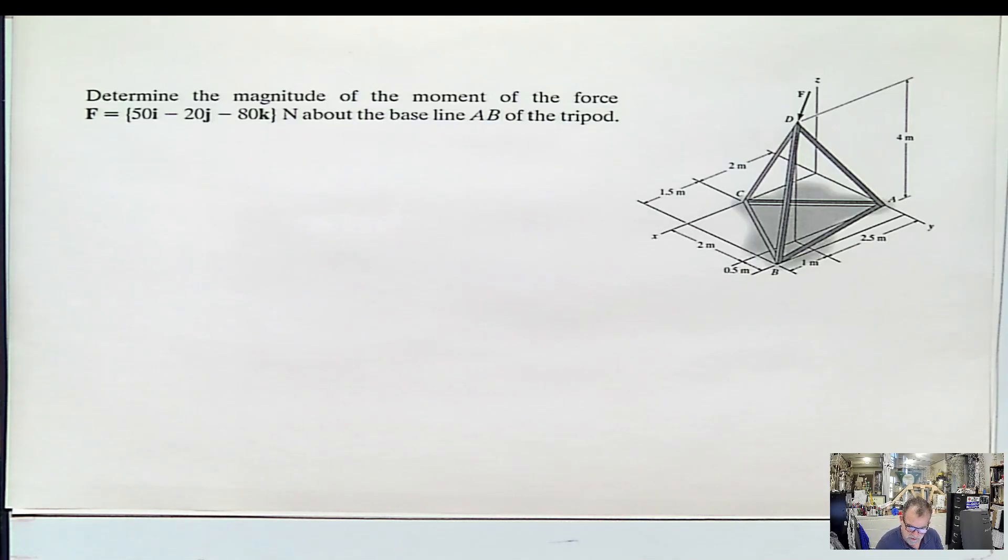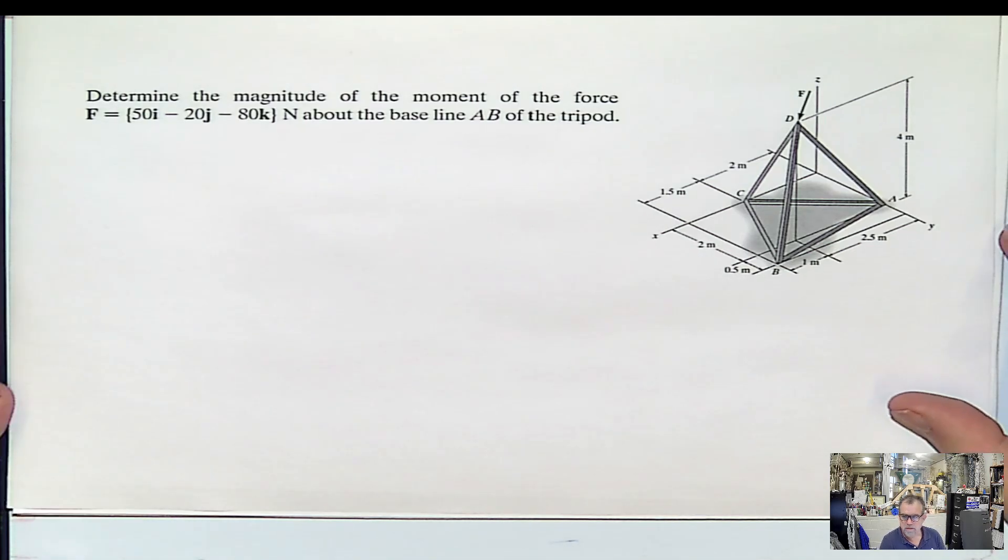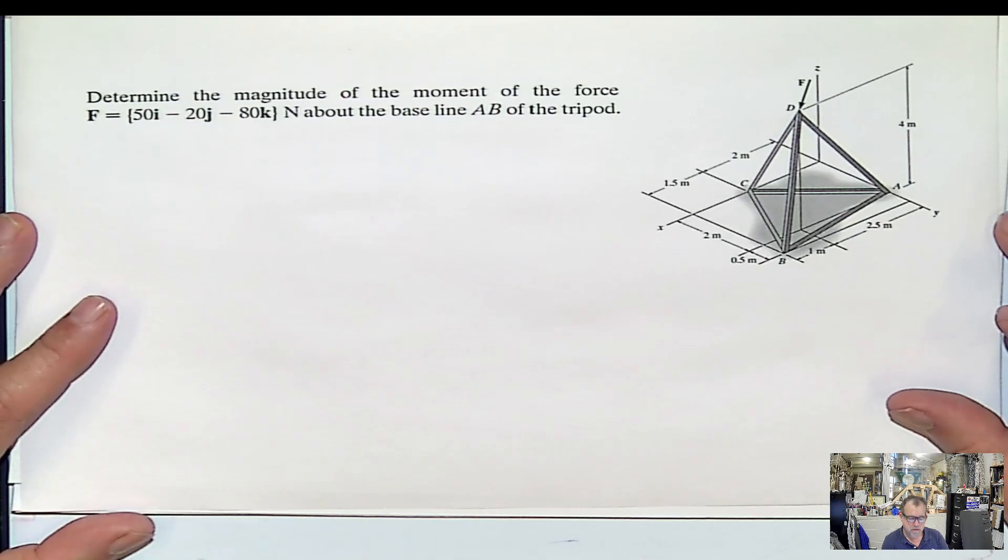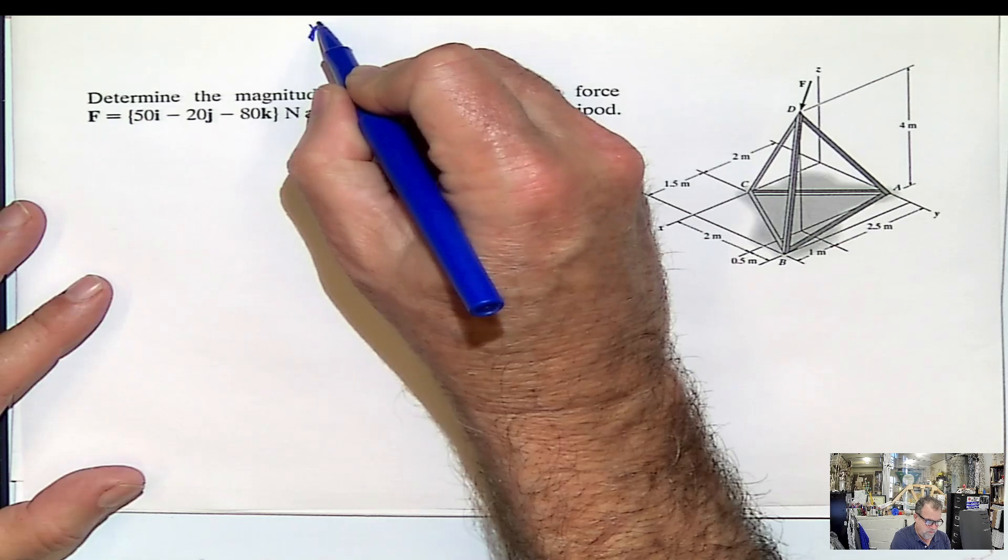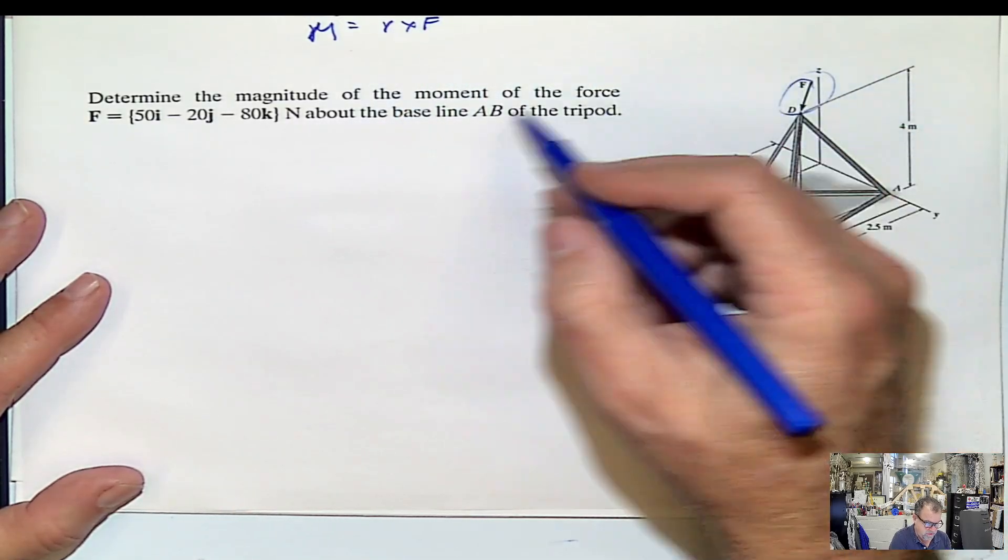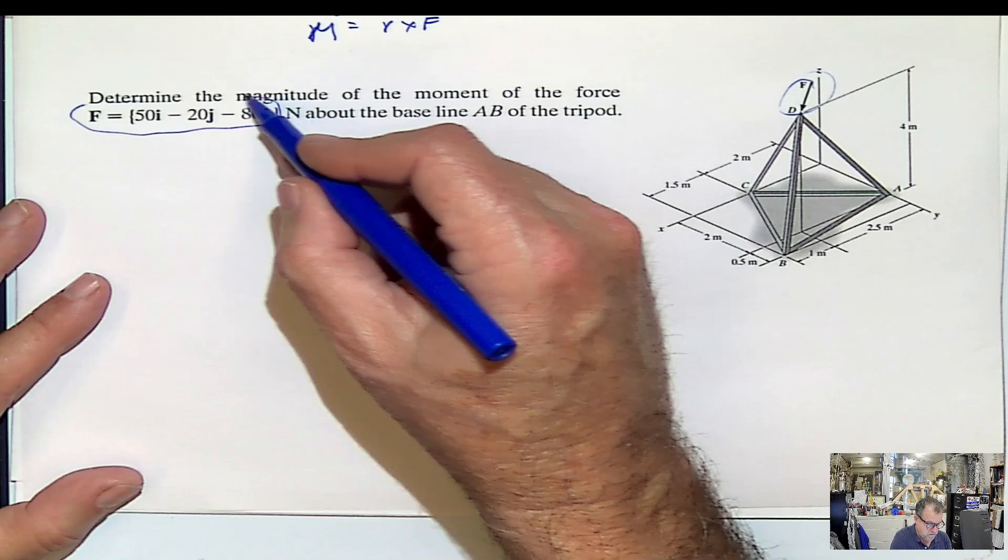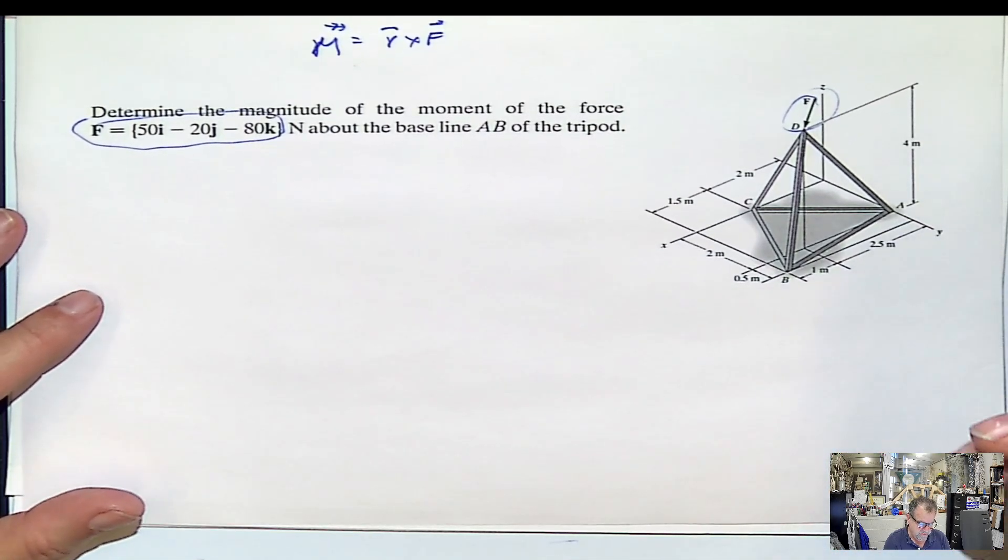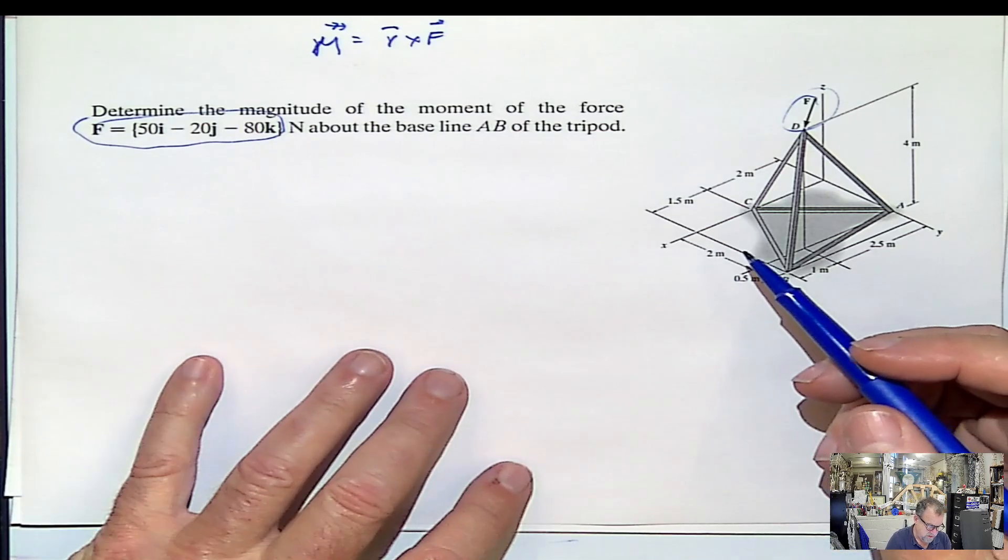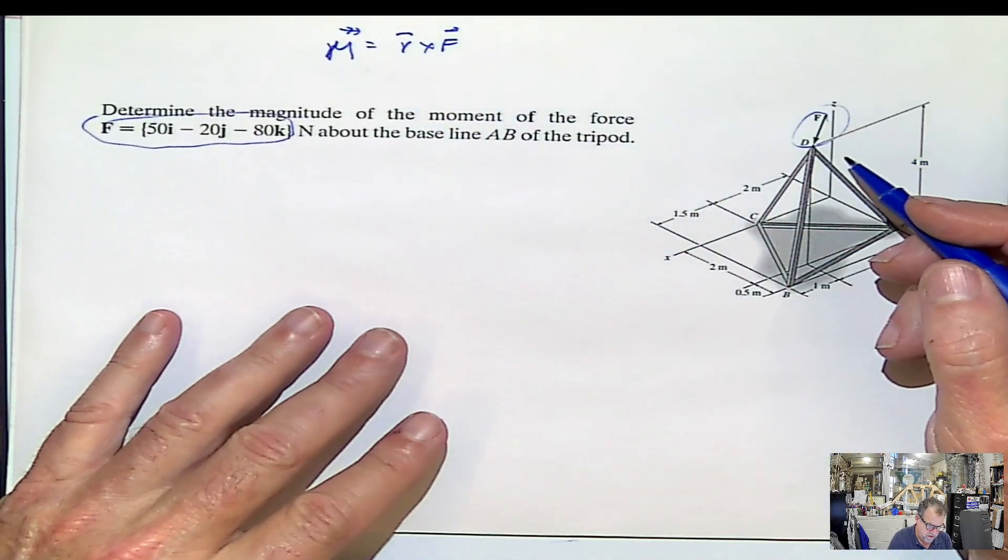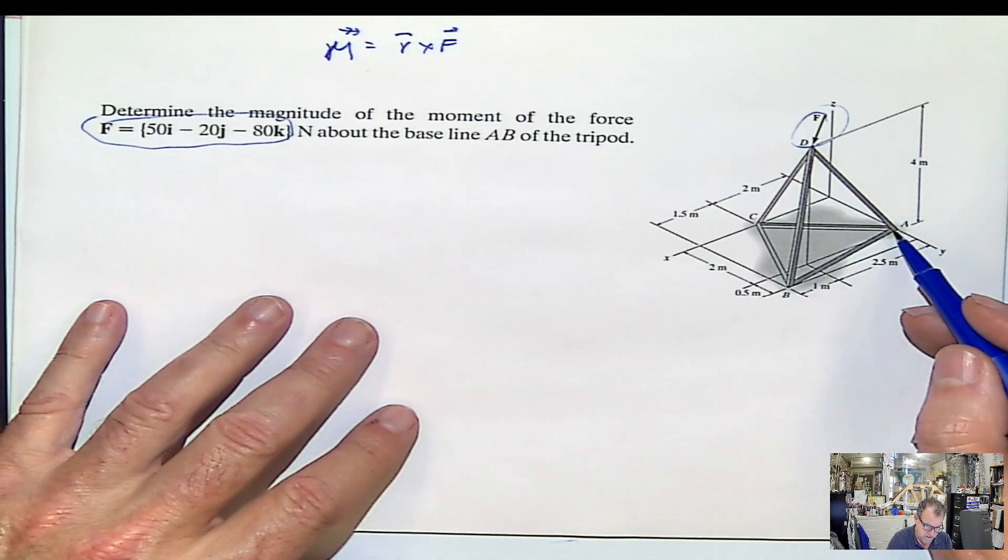Hello again. This is a problem that I have asked several times in several assignments. And the students always go crazy with this problem. I still don't understand why that is happening, because it's a very simple problem where the moment is going to be r cross F. And the force is even given in Cartesian already. So we don't have to convert anything. And the only thing that we need is basically finding the distance. That's what we have to find here. Magnitude of the moment of the force F about the tripod line AB.